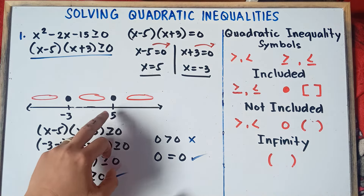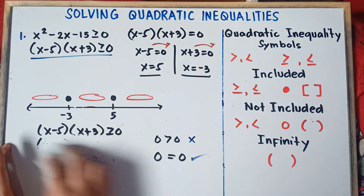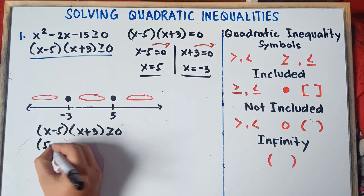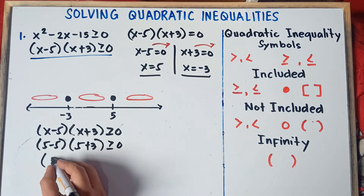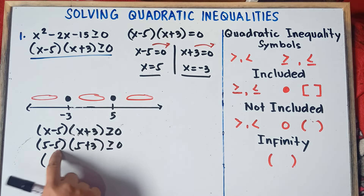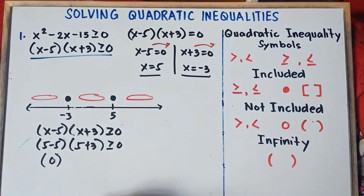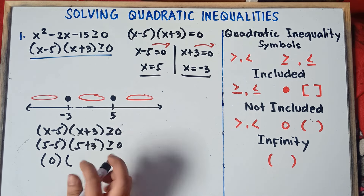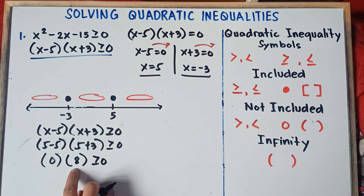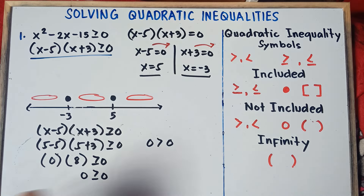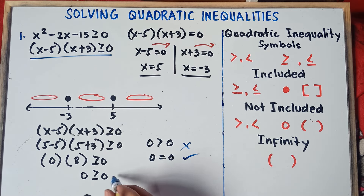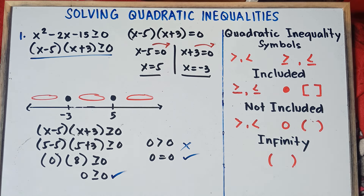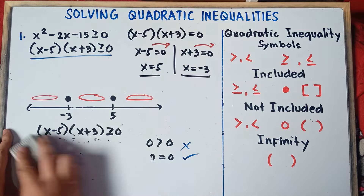Let's also verify with x equals positive 5: (5 minus 5)(5 plus 3) = (0)(8) = 0 ≥ 0. Is 0 greater than 0? No. Is 0 equal to 0? Yes — we have greater than or equal, so the statement is true. That's why we also have a closed circle at positive 5. In solving quadratic inequalities, no need to check the critical points themselves — this is just in case a teacher asks why.